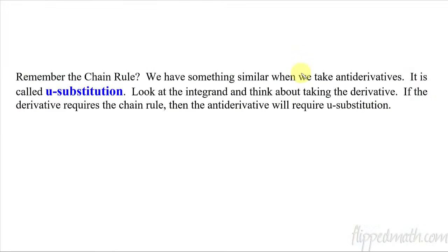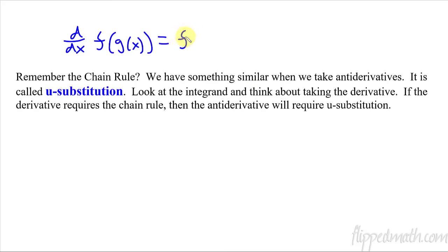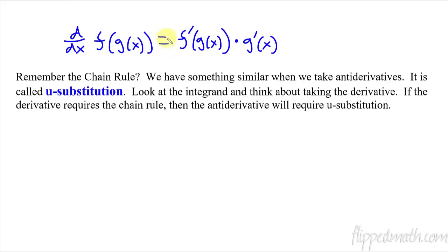Remember when we took the derivative of a composite function? We had two layers to deal with, so it equaled the derivative of the outside multiplied by the derivative of the inside. When we do integrals and you have a composite function of some sort, you have to do this thing called u-substitution.